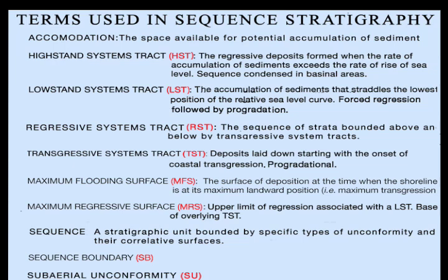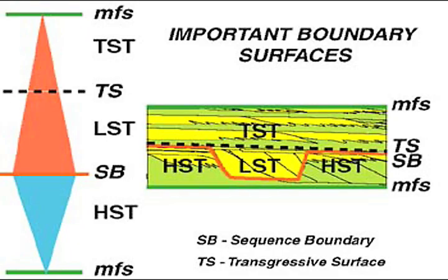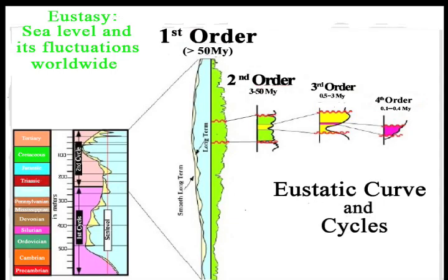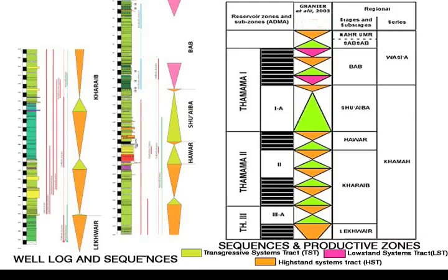Sequence stratigraphy serves mainly for correlation of strata throughout a sedimentary basin. The flooding surfaces that bound a sequence are the result of eustatic rises and falls in sea level, with tectonic uplift or subsidence also a factor. Groups of sequences comprise a static cycle now correlated worldwide. Cycles range in length from more than 50 million years for a first-order cycle to less than 10,000 years for a fifth-order cycle, the product of fluctuations in glaciation.